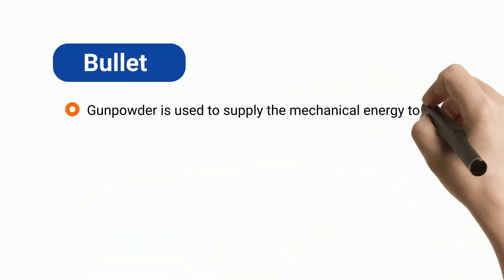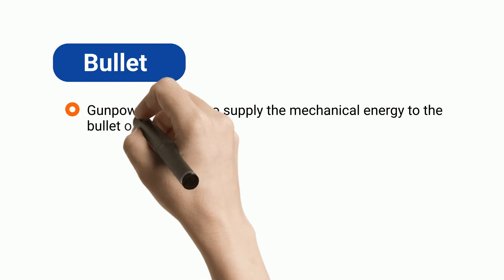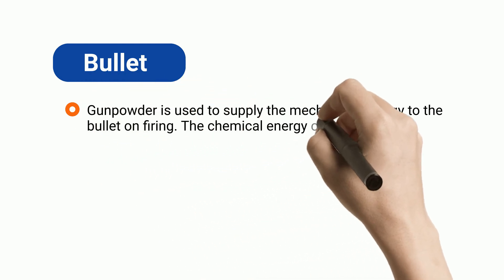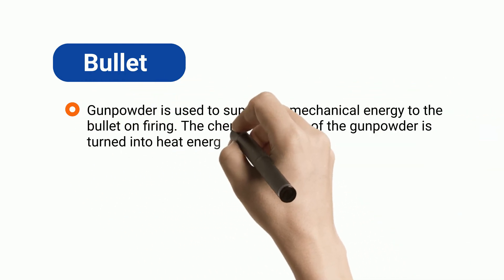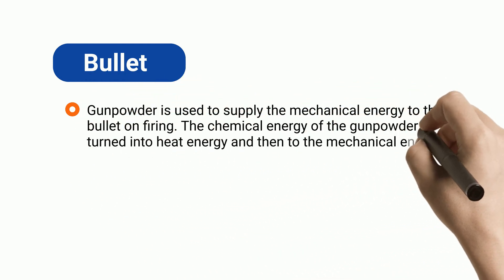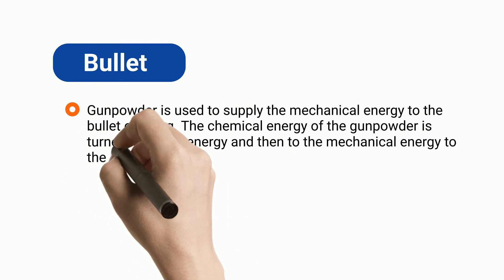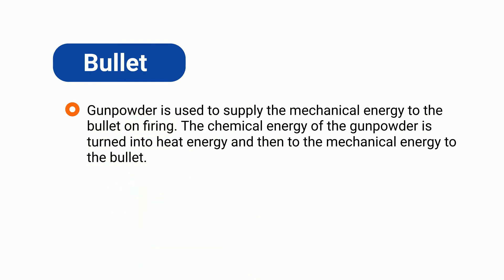Bullet: gunpowder is used to supply mechanical energy to the bullet. On firing, the chemical energy of the gunpowder is turned into heat energy and then into mechanical energy to propel the bullet.